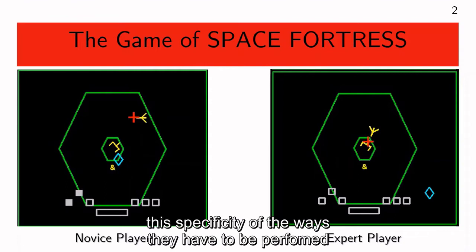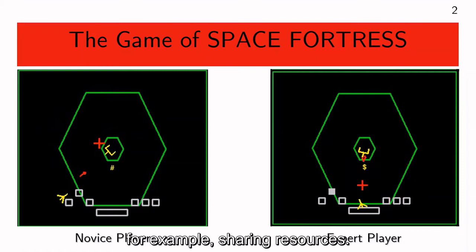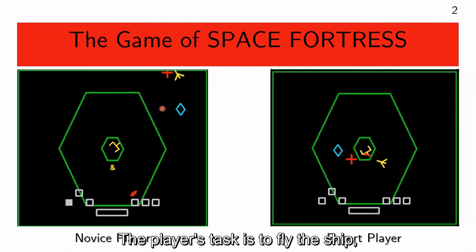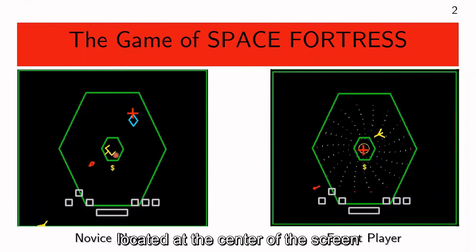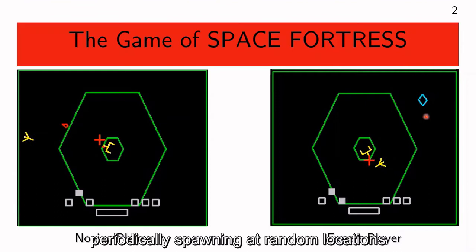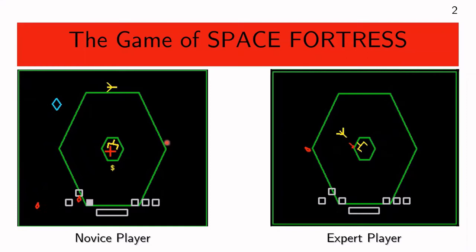The complexity arises from the multiplicity of the tasks, the specificity of the ways they have to be performed, and interconnections across tasks — for example, sharing resources. The player's task is to fly the ship, which is the yellow plane-like object, around the fortress located at the center of the screen, to fight with the fortress and its minions — the mines, which are the blue diamond-like objects — periodically spawning at random locations and homing in on the player's ship.